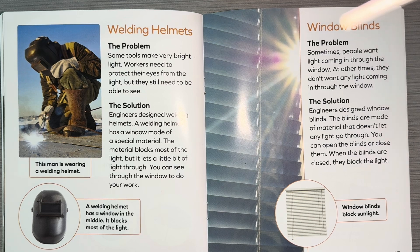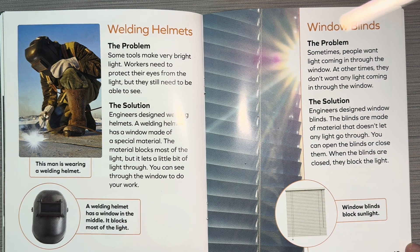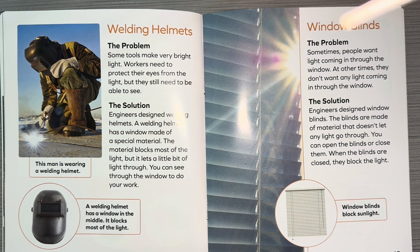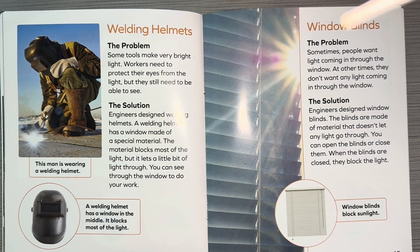Window blinds. The problem: sometimes people want light coming in through the window. At other times, they don't want any light coming in through the window. The solution: engineers designed window blinds. The blinds are made of material that doesn't let any light go through. You can open the blinds or close them. When the blinds are closed, they block the light. Window blinds block sunlight.